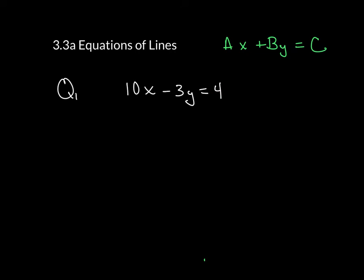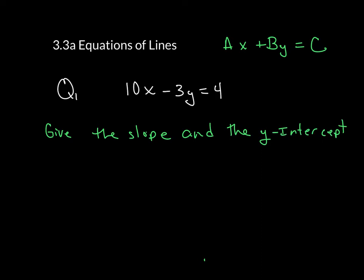The question is asking us to give the slope and the y-intercept. The way we're going to do this is change it into the form y is equal to mx plus b. So we are going to take our original equation and first move the 10x over to the other side.